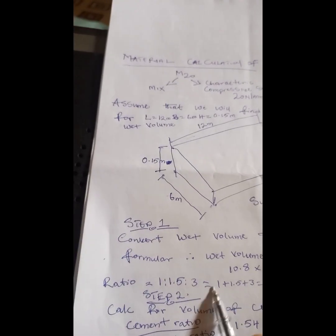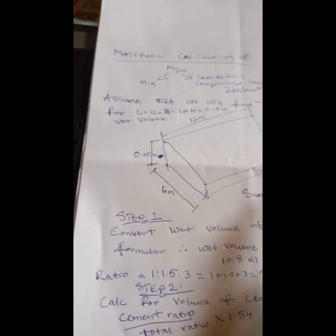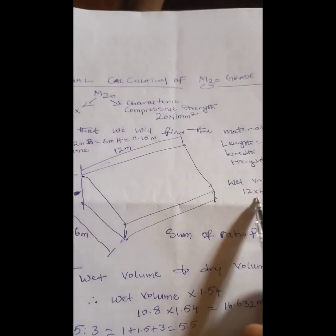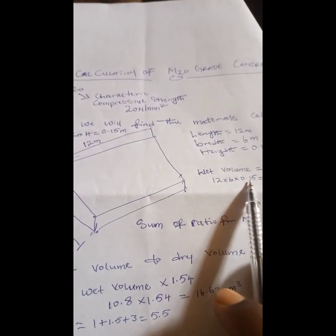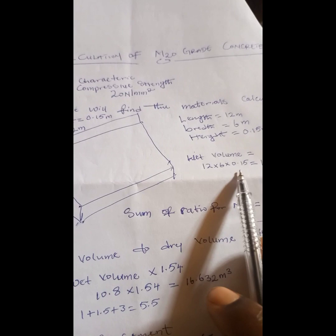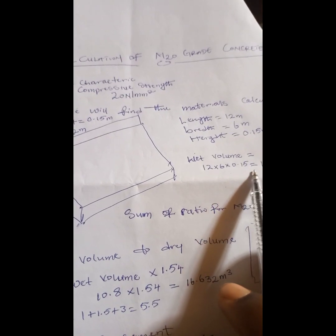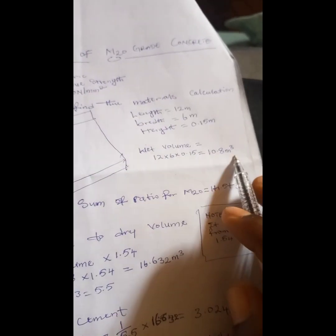When you multiply length times breadth times height to get the volume — 12 times 6 times 0.15 — you get 10.8 cubic meters.